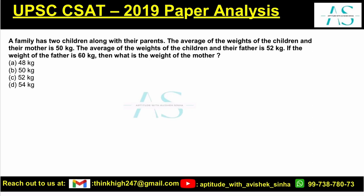A family has two children along with their parents. The average weight of the children and their mother is 50 kg. The average is calculated as sum of observations divided by number of observations.